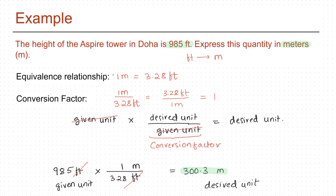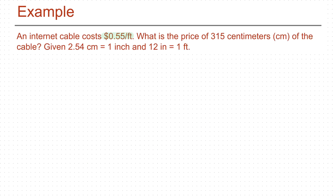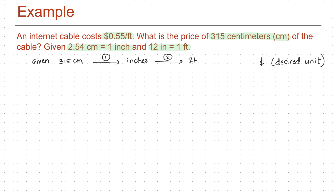The power of dimensional analysis becomes more apparent when we have multiple conversions to do. Example: an internet cable costs 0.55 dollars per feet. What is the price of 315 centimeters of this cable? Given information: 2.54 centimeters equals 1 inch, and 12 inches equals 1 foot. We know the length in centimeters and need the cost in dollars. We do this in three steps: first convert centimeters to inches, then inches to feet, then feet to dollars.